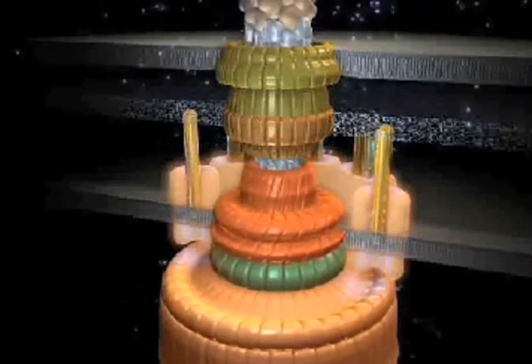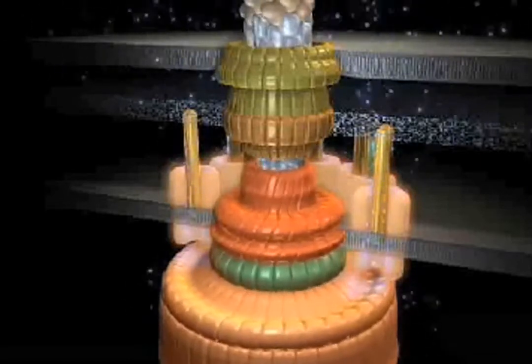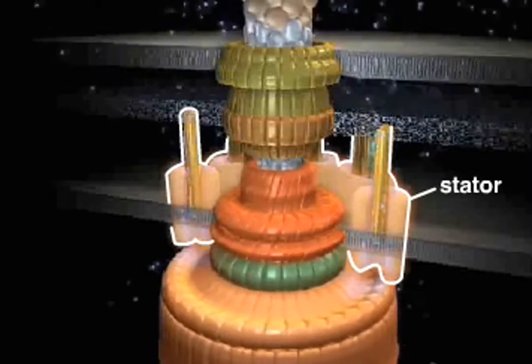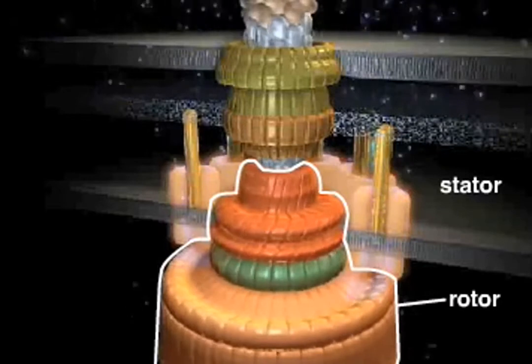Some of the rings make up the flagellar motor, which can be divided into two major parts: the stator, which is attached to the peptidoglycan layer and, as its name implies, remains stationary, and the rotor, which rotates.